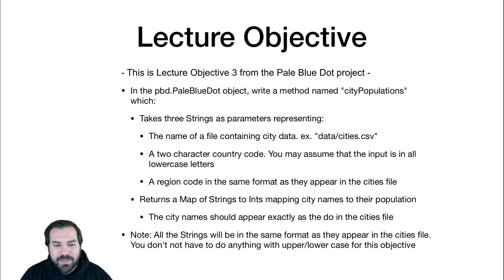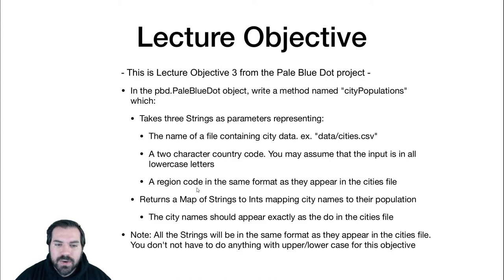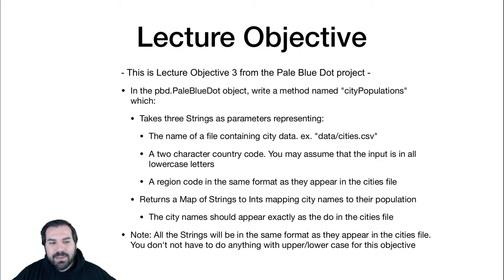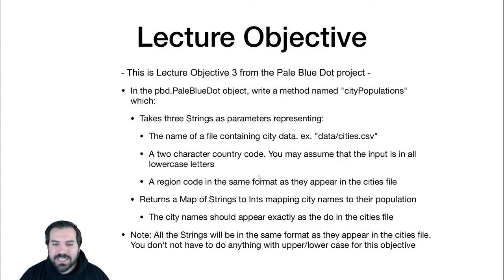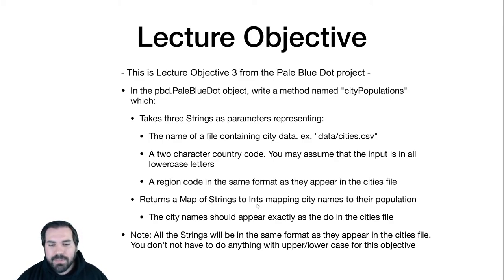The code for lecture objective three is to write the city populations method, which takes as parameters a country code and a region code and returns a map containing the populations of all the cities in that region of that country. This requires understanding the cities.csv format and then parsing that data to get the information we want. You don't have to worry about upper or lowercase at all. You can assume the country code and the region code appear exactly as they do in that file. So as you're iterating line by line, if the line's country code and region code match exactly the input of this method, then you have a city in the region you're concerned with. Add that city name as a key to the map, mapping to its population, then return that map after reading through the entire file.